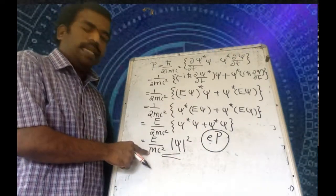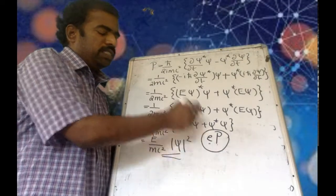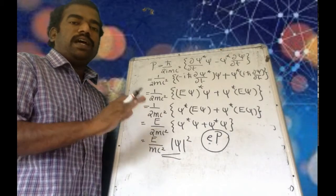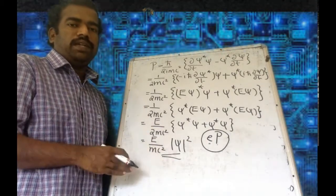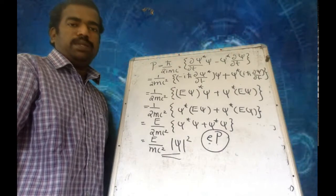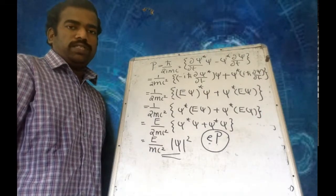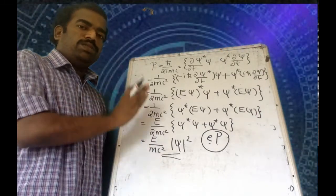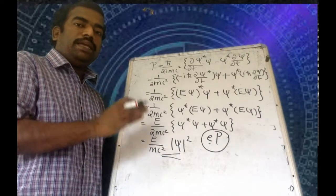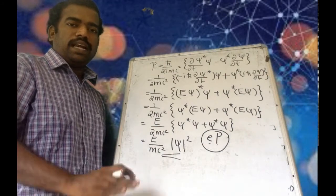Since P can take positive as well as negative values, in the Klein-Gordon equation this P is not probability density. But when you multiply P with charge, you get charge density. The probability current density S has a form similar to the non-relativistic Schrödinger equation, but the form of P is different — eP can be interpreted as the charge density of the system. Thank you.